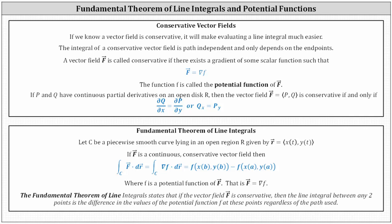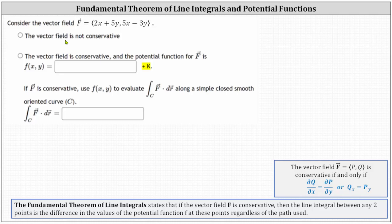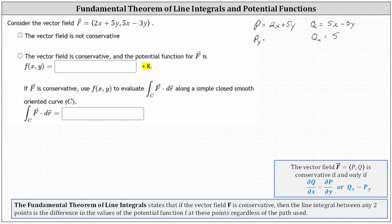Going back to our first example, the vector field F has P equals 2x plus 5y and Q equals 5x minus 3y. Let's check to see if it is conservative by checking if the partial of Q with respect to X equals the partial of P with respect to Y. The partial of Q with respect to X is the derivative of 5x minus 3y with respect to X, treating Y as a constant, which is 5. The partial of P with respect to Y is the derivative of 2x plus 5y with respect to Y, treating X as a constant, which is also 5. So because these partials are equal, the vector field F is conservative.